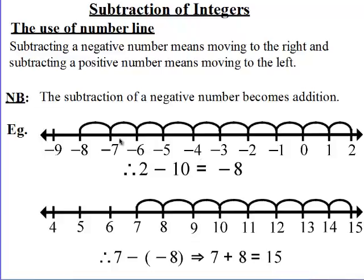So the first example, we have 2 minus 10. So minus 10 here indicates a subtraction, this is a subtraction sign of a positive number. And subtracting a positive number means we move to the left. So starting from the number 2, we are going to move to the left 10 times. Let's do that.